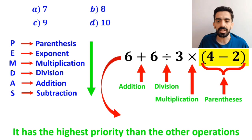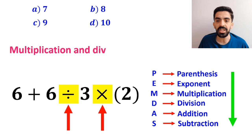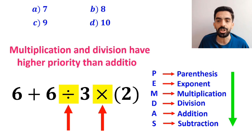So, instead of this expression, we can write 6 plus 6 divided by 3 times 2. In the next step, we need to handle the division and multiplication, because multiplication and division have higher priority than addition.